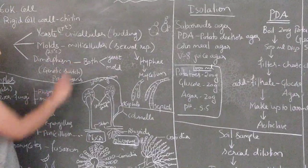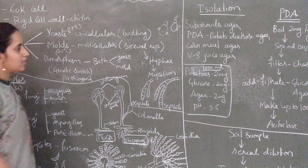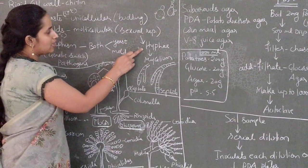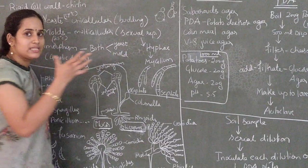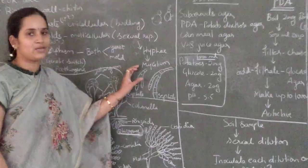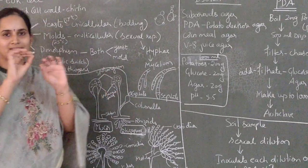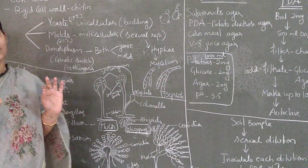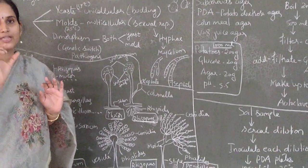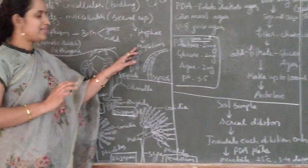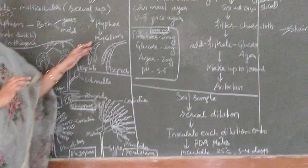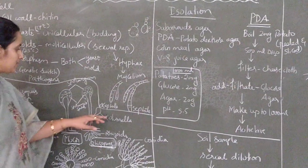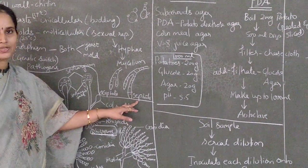Coming to the molds, which are multicellular, the body structure will be called the hyphae. The hyphae will form the mycelium, which are thin thread-like structures, or the cottony growth you can see on the plate. That cottony growth is called the mycelium. These thread-like structures are of two types: aseptate and septate.